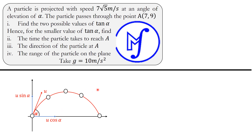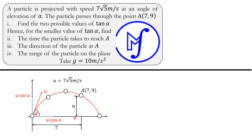The initial speed of the particle is 7.5 meters per second. The particle passes through point A. The coordinates of A are (7, 9), so the vertical distance from the ground is 9 units and the horizontal distance from the point of projection is 7 units. We have x = 7 and y = 9. We need to find the two possible values of tan alpha.